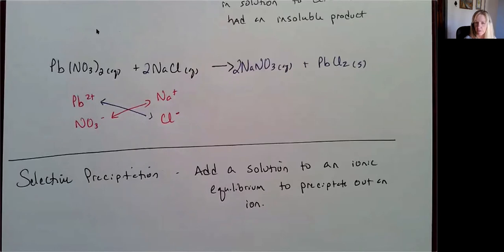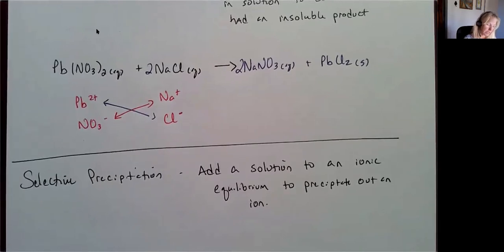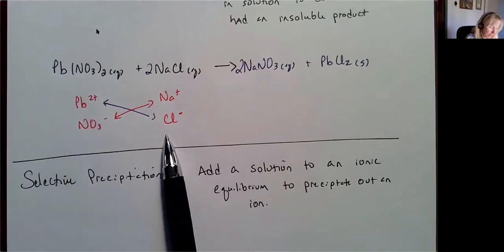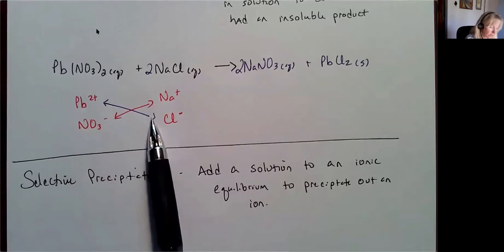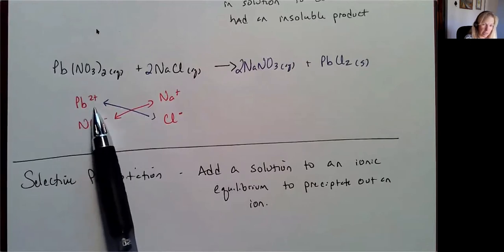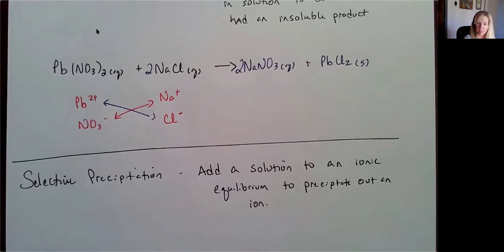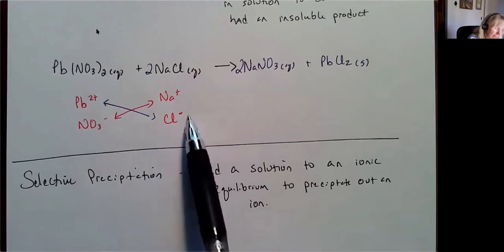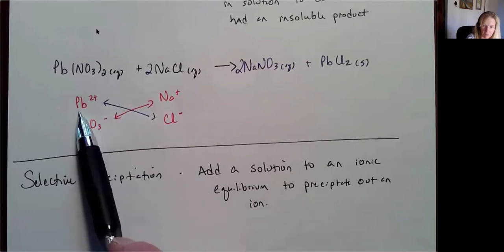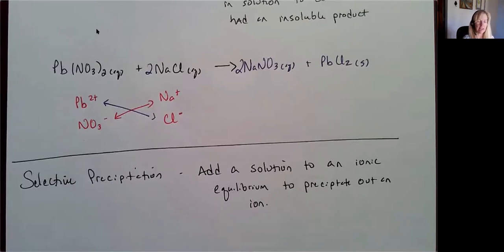This is often helpful in a laboratory setting if I want to remove lead ions from my solution. I'm going to add enough chloride ions so that I form an insoluble product, essentially removing all of those lead ions. If I want to force it so that it all comes out of solution, I'm going to add chloride ions in excess. That's selective precipitation — a strategy to remove an ion from solution.